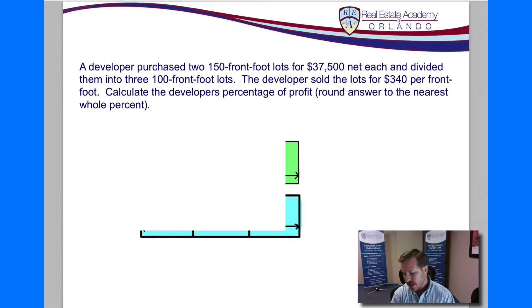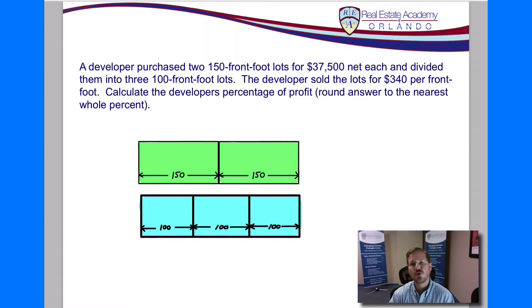What we can see is up at the top here in green. These are the two lots that the developer started with. So they bought two of these lots. Each of them is 150 feet wide. That's what they mean when they say front foot. So we have two lots 150 feet wide each. If we have two of them, we have 300 feet total. Now they subdivided those lots into three 100-front-foot lots. So we just took all 300 feet we had, divided it into three equal parcels, and now we have three 100-foot lots. So that's visually what's happening here.